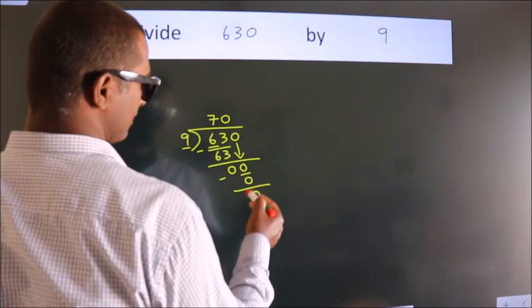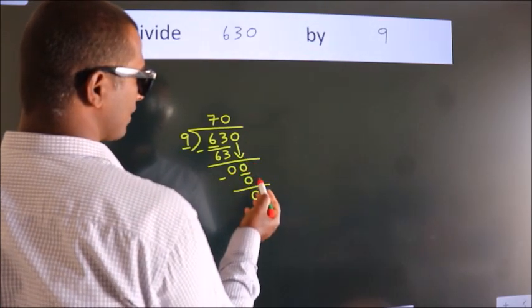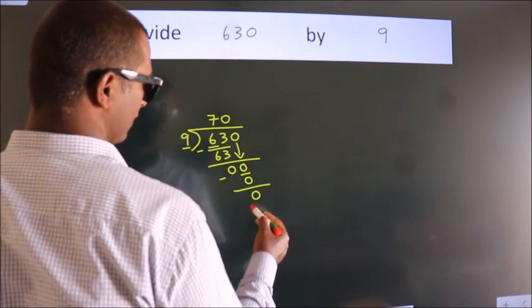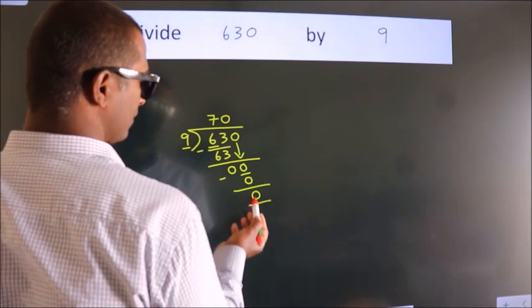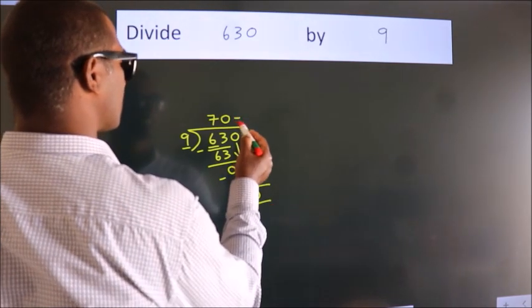After this, no more numbers to bring it down. And, we got remainder 0. So, this is our quotient, 70.